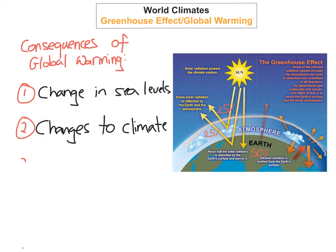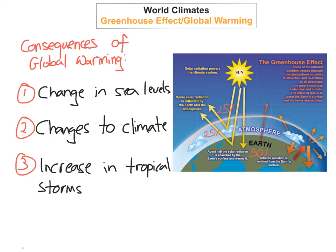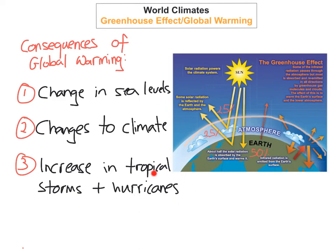The third consequence of global warming is an increase in tropical storms and hurricanes. Because the earth is heating up, waters are going to be warmer, and hurricanes and tropical storms need warm water in order to start. This will lead to a lot more tropical storms and hurricanes, which could cause huge damage, such as the hurricanes that happened in 2005 with Hurricane Katrina and the more recent Hurricane Sandy in America.